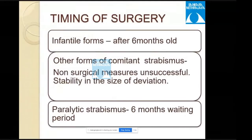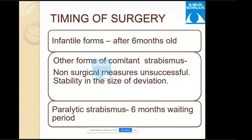Regarding timing of surgery: in infantile forms, surgery is usually done after six months of age. In other forms of comitant strabismus, surgery is done when non-surgical measures are unsuccessful and when stability in the size of deviation is achieved. In paralytic strabismus, a six-month waiting period is advised.